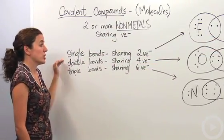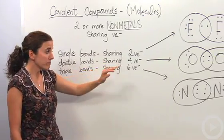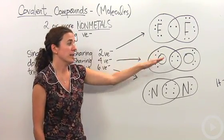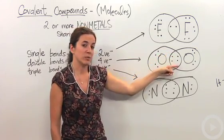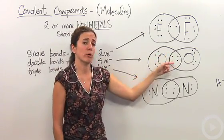Double bonds share four valence electrons within each other. Oxygen's a good example of a double bond. When oxygen bonds with itself, it shares four electrons within itself, creating a double bond here.